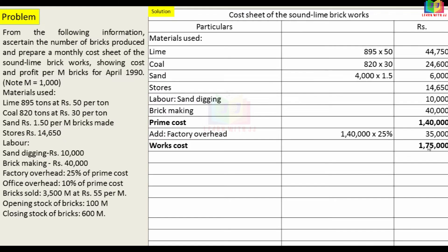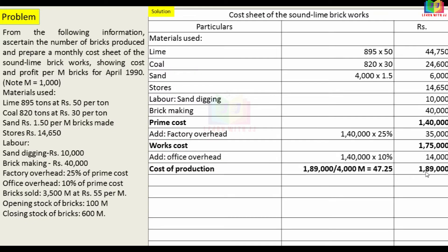Adding factory overhead to prime cost gives works cost of 1,75,000. Office overhead is 10% of prime cost: 10% of 1,40,000 = 14,000. Works cost 1,75,000 plus office overhead 14,000 gives cost of production of 1,89,000. Cost of production per M brick is 47.25.